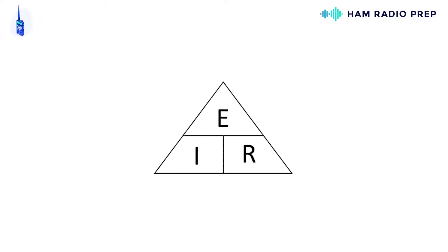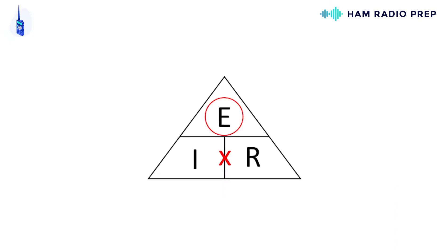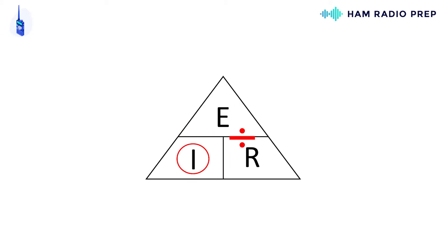Here is a triangle representation that is useful to help calculate Ohm's law. Voltage is on the top and current and resistance are on the bottom of the triangle. To calculate for the missing value, circle the value that you want to calculate, then using the triangle either multiply or divide the other two values.